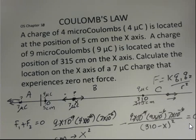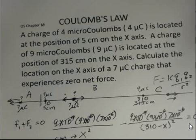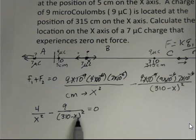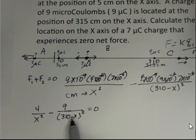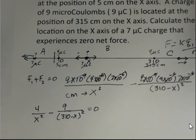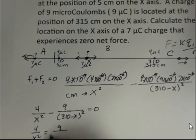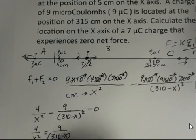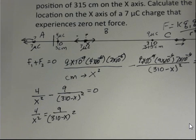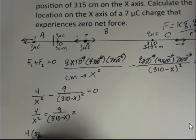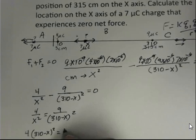To solve, I add the second term to both sides, giving 4 over X squared equals 9 over the quantity 310 minus X, squared. Now I'm going to cross multiply, so I get 4 times the quantity 310 minus X, squared, equals 9X squared.